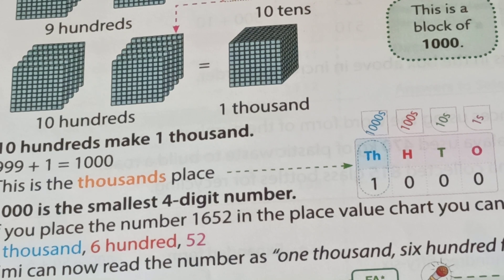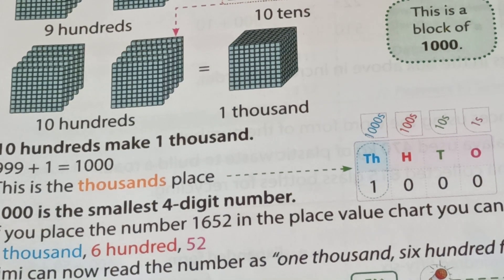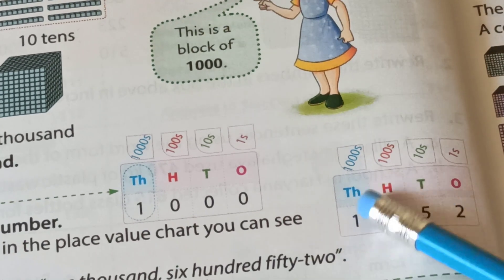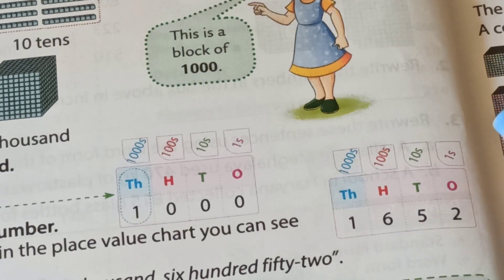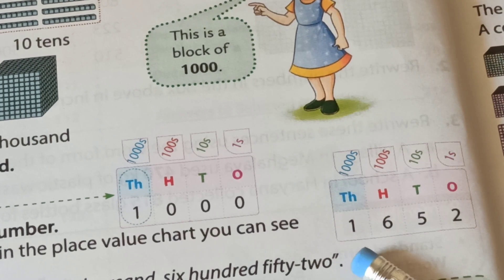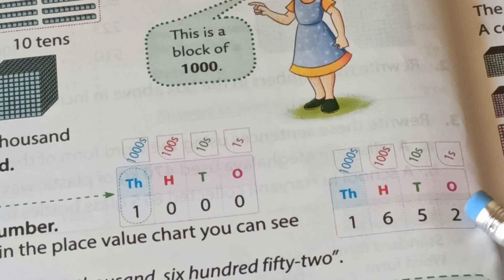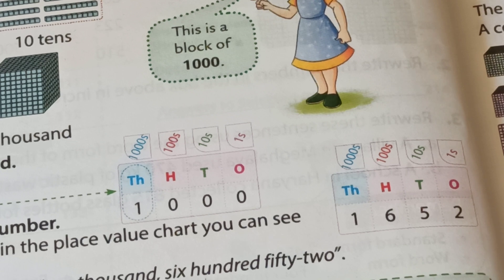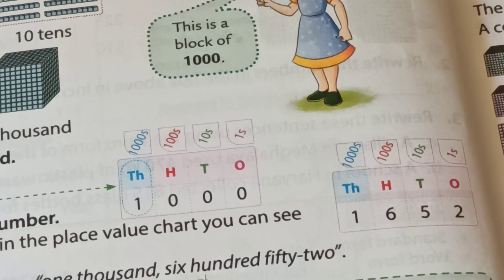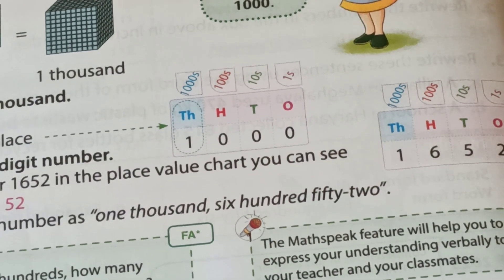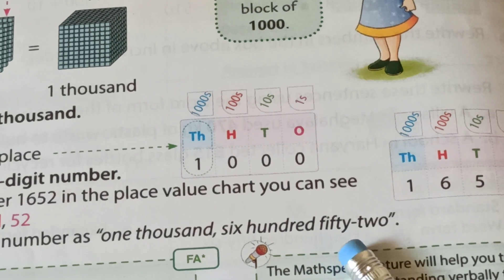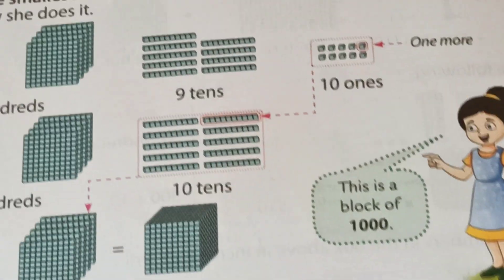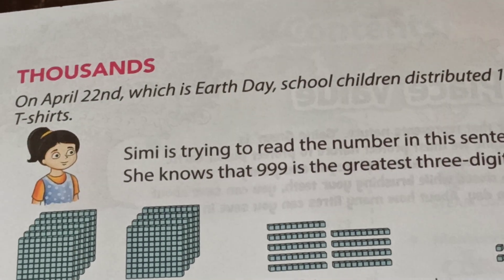If you place the number 1,652 in the place value chart: one in the thousands place, six in the hundreds place, five in the tens place, and two in the ones place. We read it as one thousand six hundred fifty-two. In words: one thousand — T-H-O-U-S-A-N-D — six hundred fifty-two. I hope kids this section on thousands was enjoyed and well understood by all of you.